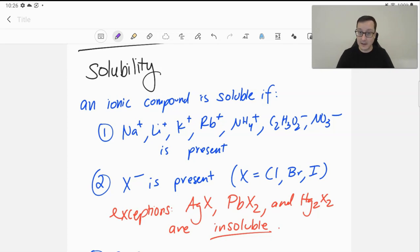There are exceptions. Silver halides, lead 2 halides, and mercury 1 halides are all insoluble. So silver chloride, silver bromide, silver iodide, all insoluble.